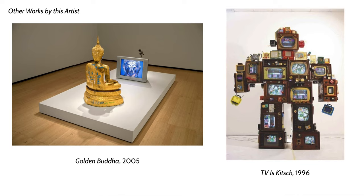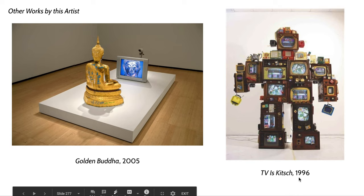Here are a couple of other works by Nam June Paik. He oftentimes uses aspects of Eastern culture in his works as well. One is called Golden Buddha — basically a camera feed of a Buddha statue staring at itself, with various elements of graffiti on the statue. Another creates a robot called TV's Kitsch. Again we're having that theme of Kitsch emerging over and over again in global contemporary art.